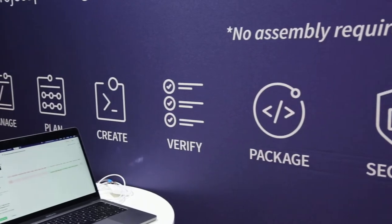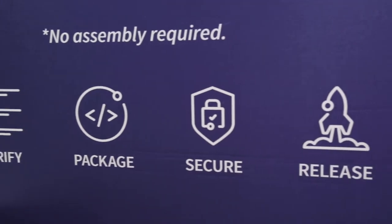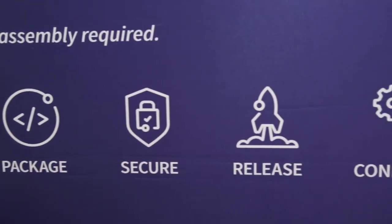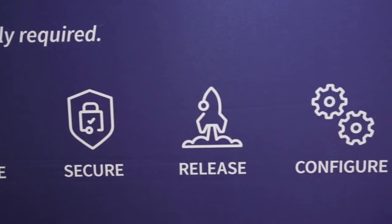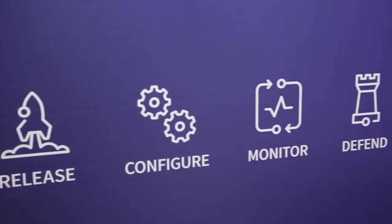Cloud-native apps tend to run on Kubernetes, which is a layer that orchestrates the containers they run in. That adds a whole other layer — effectively an operating system — that has to be secured, with a whole new set of vulnerabilities that can happen and that have to be found and accounted for.